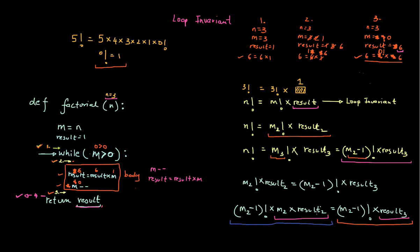But from my loop invariant, I already know that result3 — whatever result is at that point — must be using the older value of m. If I were to have result equals result times m after m minus minus, the result I'm computing is using a new value of m, which is m3. So I'm using m3 times the older result, meaning this can be rewritten as result2 times m3 equals result3.